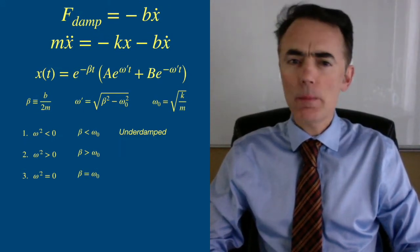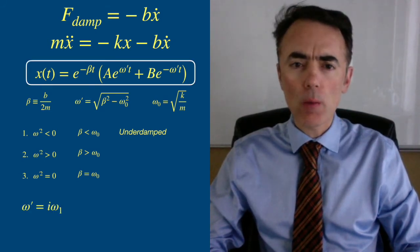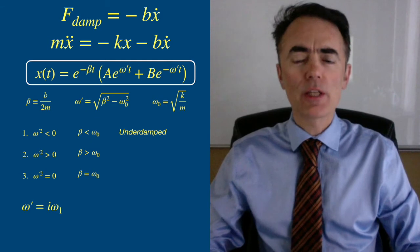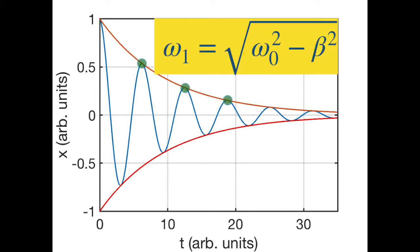When we went back to the general solution we found that omega prime was imaginary, so the exponents were imaginary. This led to a solution that was an oscillatory motion exponentially damped, where the angular frequency of those oscillations is smaller than the natural frequency omega naught.